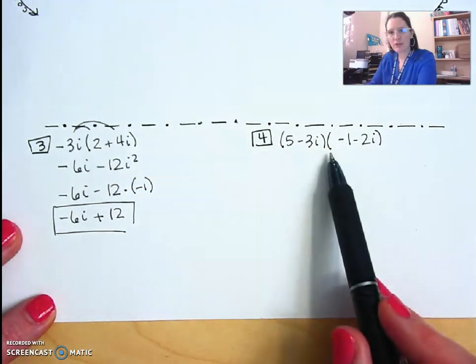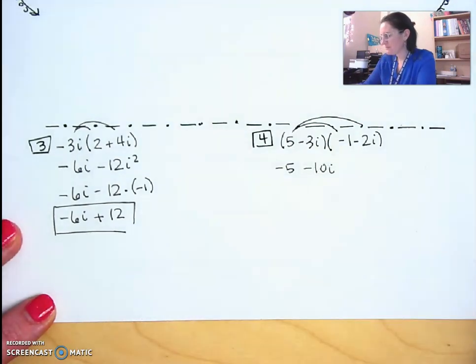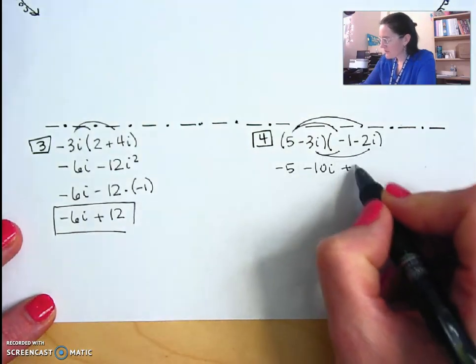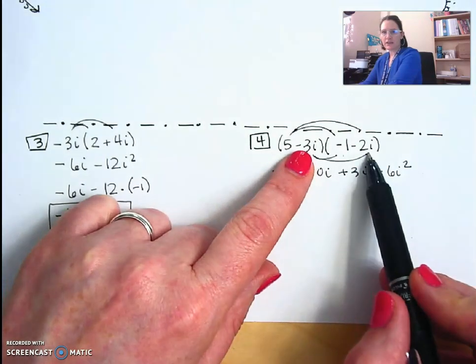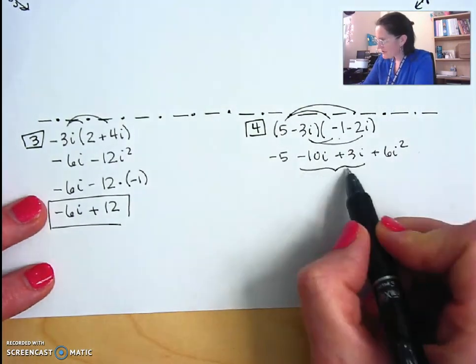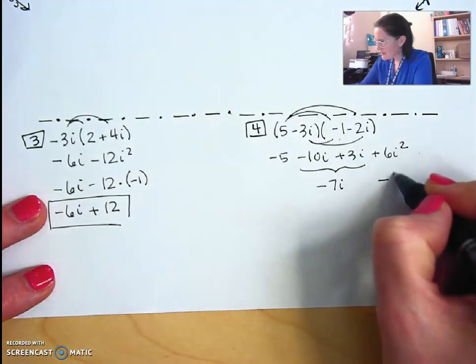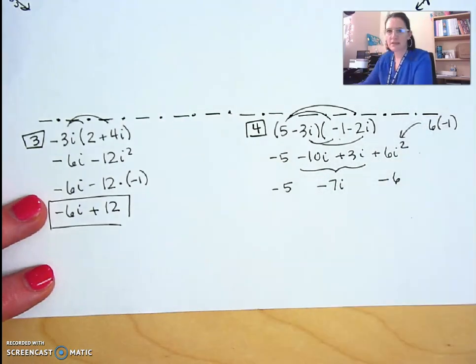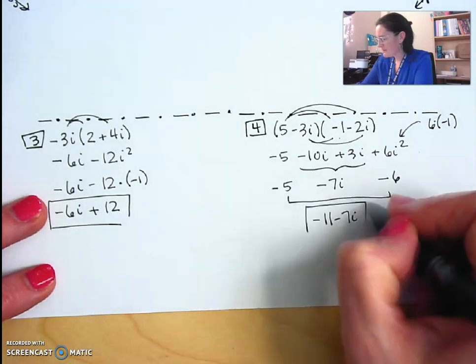And then 4 was double distributive property or FOIL. So I'm going to distribute the 5. That gives me negative 5 minus 10i. And then distribute the negative 3i. That gives me a positive 3i and a positive 6i squared, because I have negative times negative and a negative times negative, so both of those will be positive. So now I can combine these two. Negative 10i positive 3i is negative 7i. And plus 6i squared becomes a negative 6, because it would be positive 6 times negative 1, which is negative 6. And then combine these two. Negative 11 minus 7i.